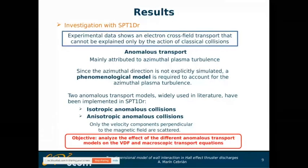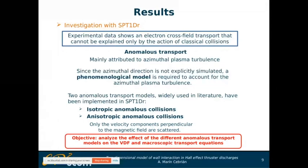To give a flavor of the results I'm going to get from my thesis, I want to show some results of a simulation with anomalous transport in the 1D radial model. Experimental data shows electron cross-field transport that cannot be explained only by classical collisions, and this anomalous transport is mainly attributed to azimuthal plasma turbulence. Since our 1D model doesn't explicitly simulate the azimuthal direction, we need a phenomenological model. Two main models have been widely used in the literature: isotropic and anisotropic anomalous collisions, and both are implemented in the 1D radial model. The goal is to analyze the effect of different anomalous transport models on the velocity distribution function and macroscopic transport equations.